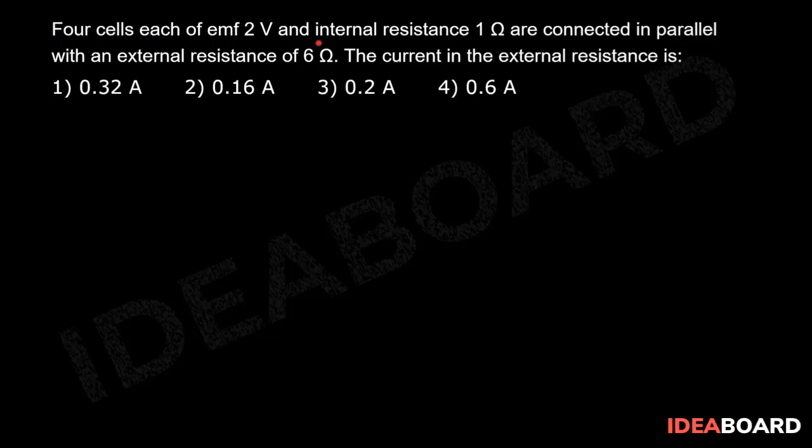Four cells each of emf 2 volt and internal resistance 1 ohm are connected in parallel with an external resistance of 6 ohm. The current in the external resistance is?